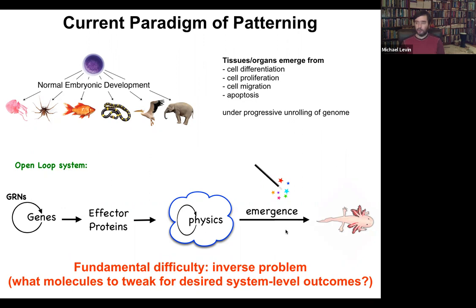This story is certainly true in the sense that these things all happen, but it's incomplete. It has a fundamental difficulty: the inverse problem. If we're committed to this feed-forward emergence story, then making changes to anatomy requires us to exert our interventions at the genetic level. That means we have to try to invert this process of emergence, which is fundamentally insolvable. Most of these inverse problems are just too difficult to solve — how do you know what genes to tweak to make desired changes at the three-dimensional anatomy level?